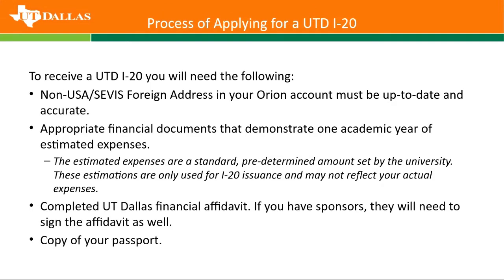We'll get started on the actual process of applying for your UTD I-20. In order to get your I-20, there are several things you'll need — some information and some documentation. One of the things you already have is your address. We actually need to know your foreign address. That foreign address is really important and it's part of your visa application process, so make sure that it's correct. It does need to be a physical address and not a PO box. We're not going to mail anything to that address — it's just for record's sake.